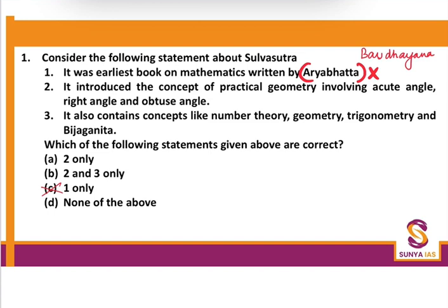Statement 2: It introduced the concept of practical geometry involving acute angle, right angle, and obtuse angle. We have seen that these concepts were not given in Sulva Sutra but in Apasthambh. Statement 3: It contains concepts like number theory, geometry, trigonometry, and algebra — these are contained in Aryabhatiya, written by Aryabhad. So none of the statements are correct, making option D the answer.